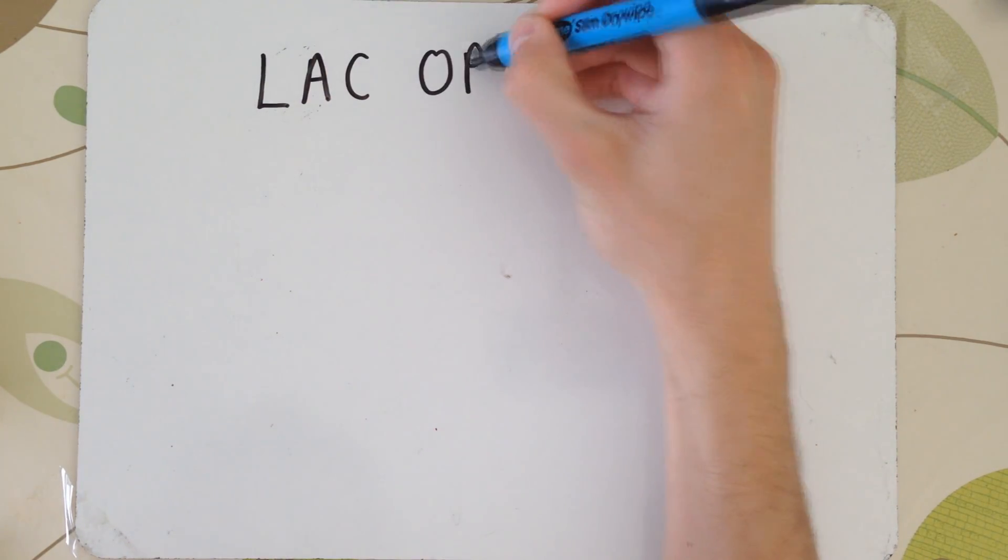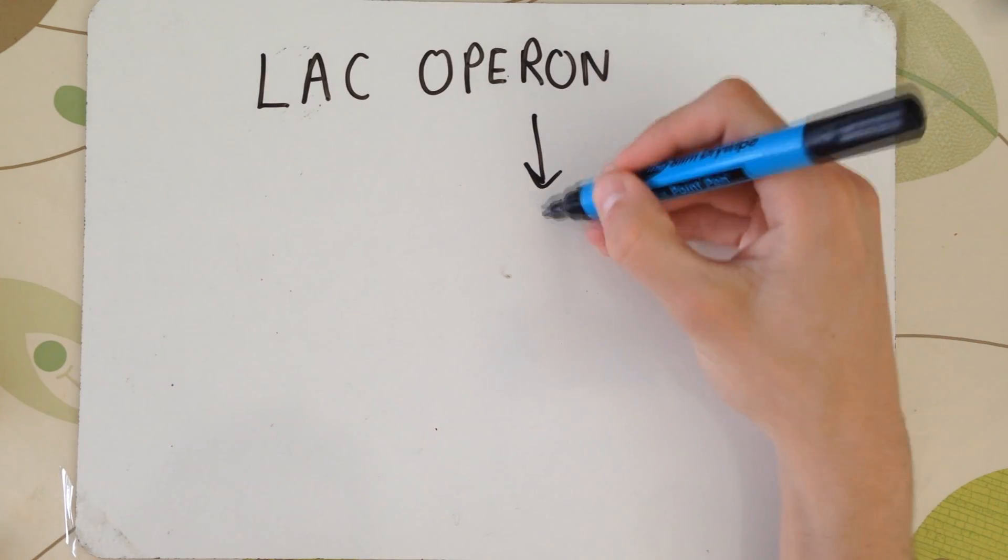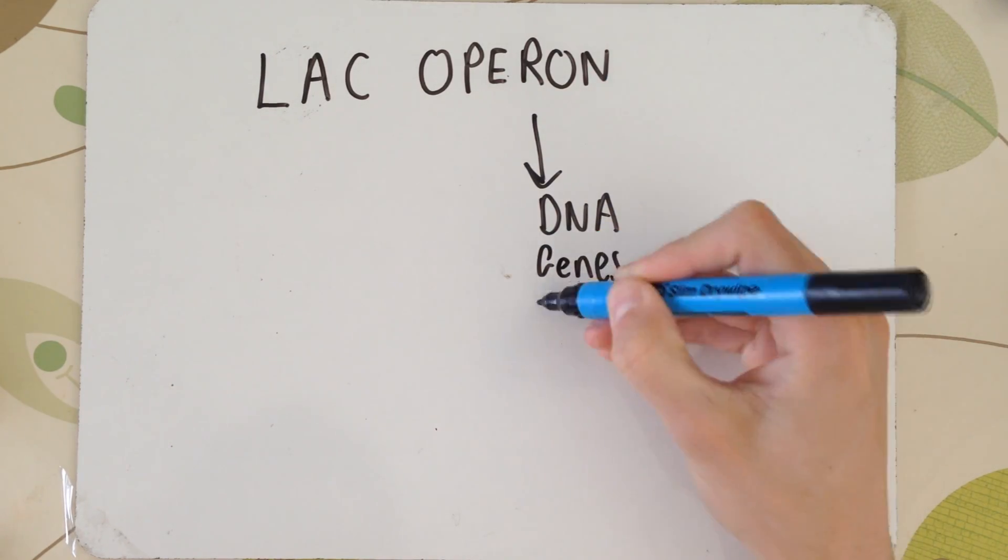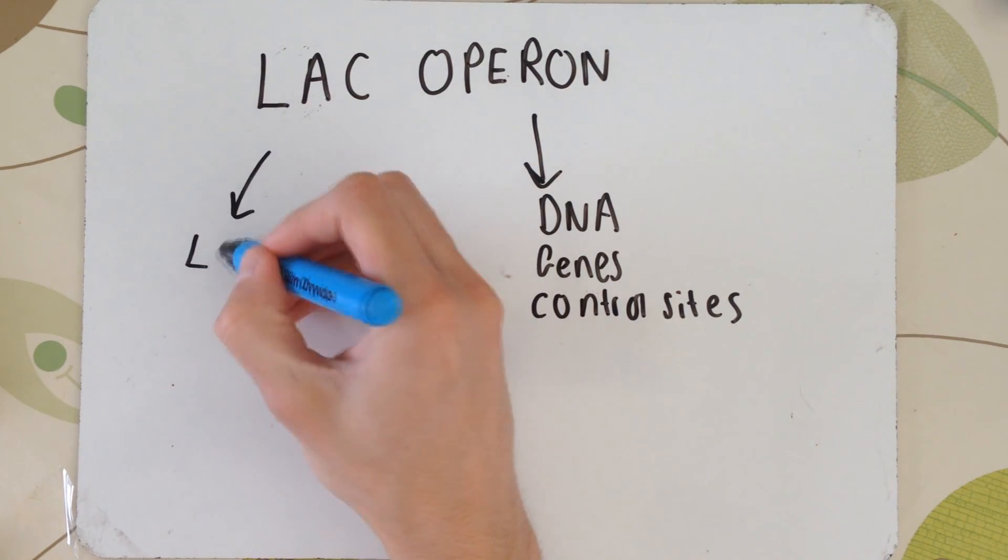In today's video, we're going to talk about the lac operon. An operon is essentially a short section of DNA that contains structural genes and control sites to turn these genes on and off.